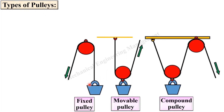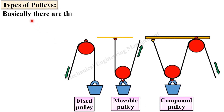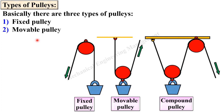Basically there are three types of the pulley. The first one is fixed pulley, the second one is movable pulley, and the third one is compound pulley.